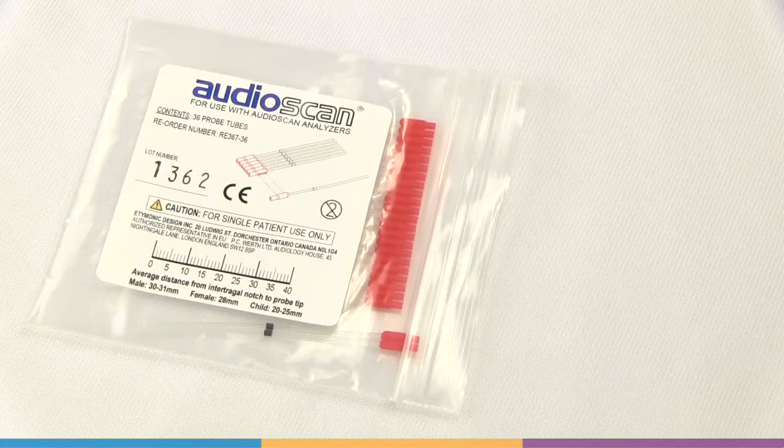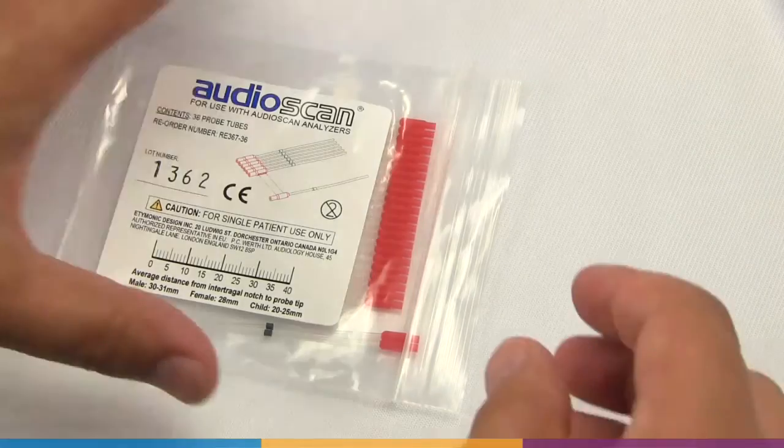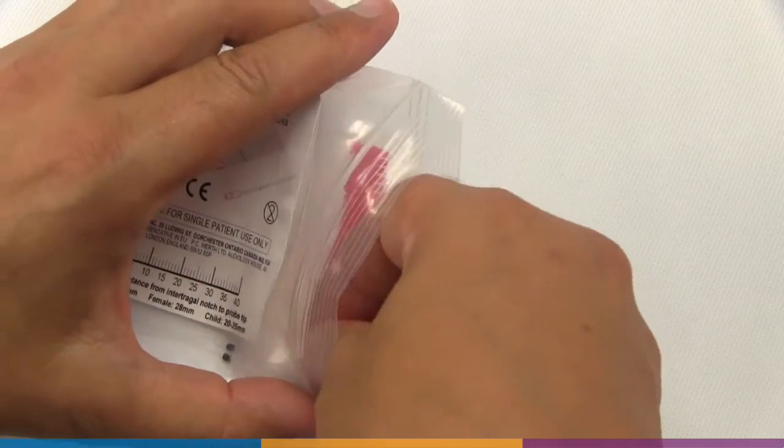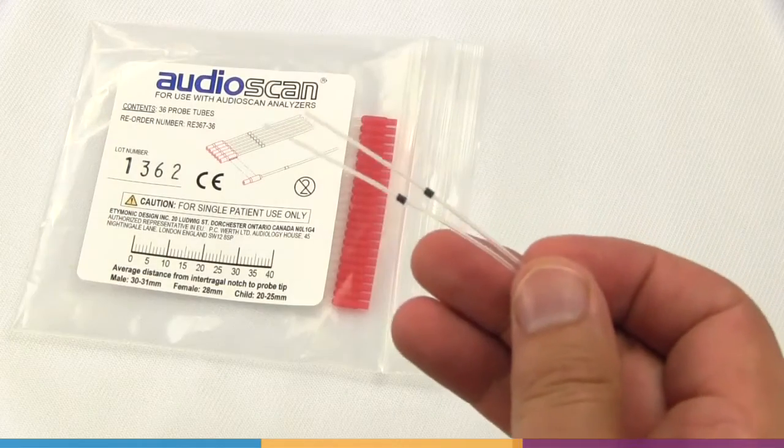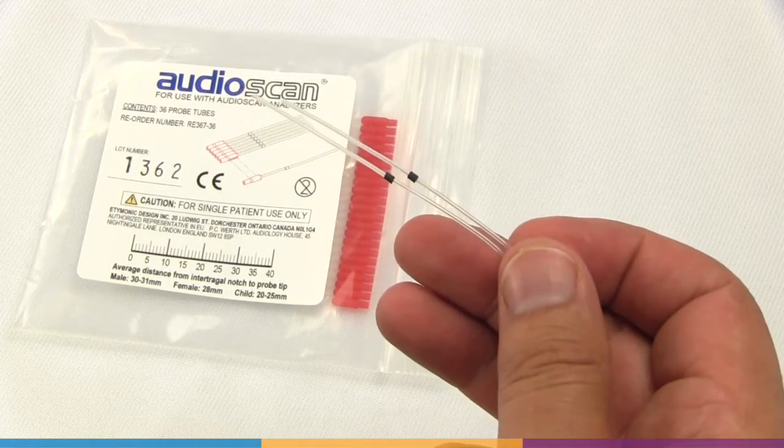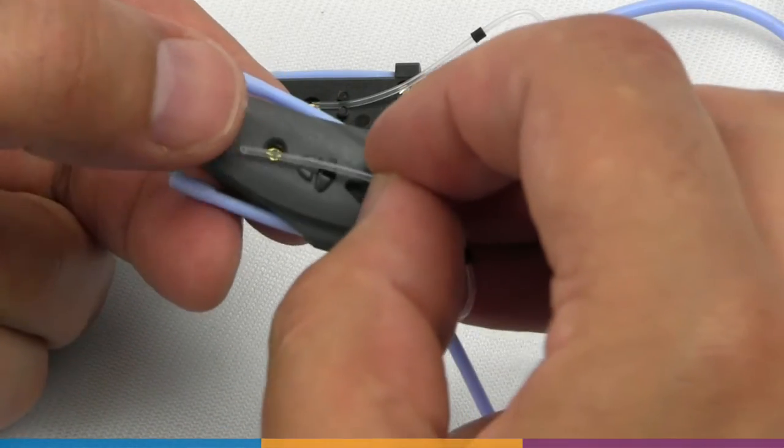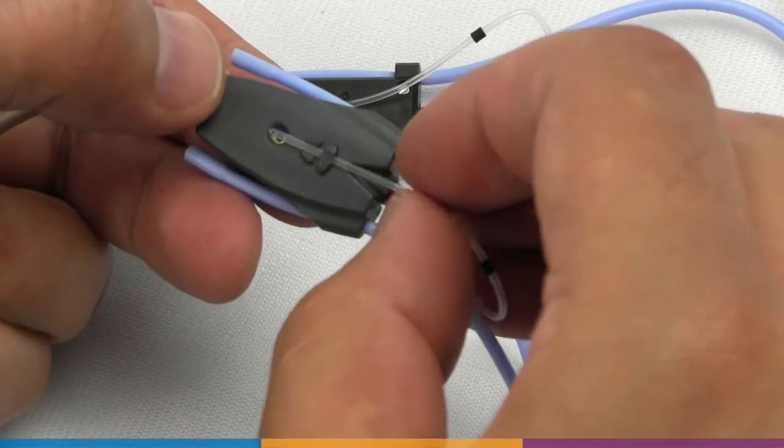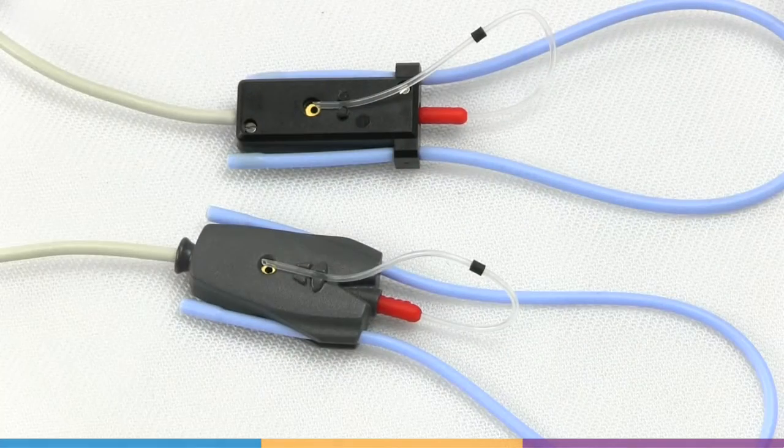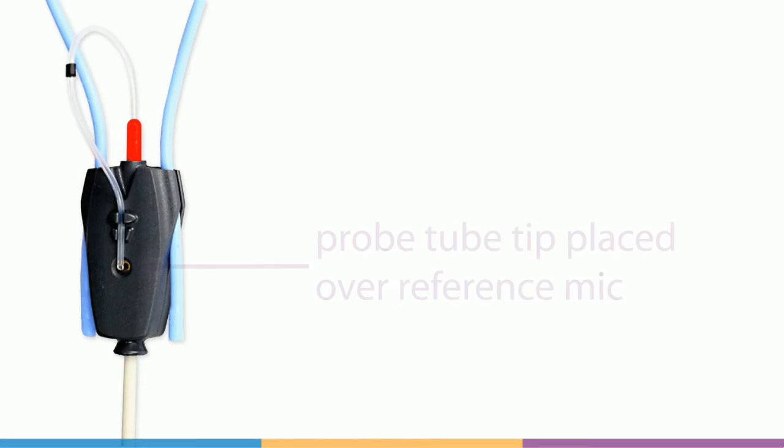Place a new probe tube on the probe microphone module. Do not attempt to sterilize probe tubes, as this process leaves residue which damages the probe microphones. The probe tube should be bent over and placed between the posts on the reference microphone side of the module. The tube must be positioned so that the tip is over the reference microphone opening.